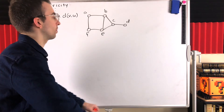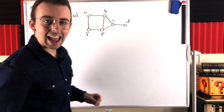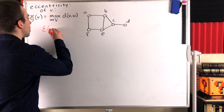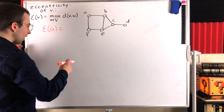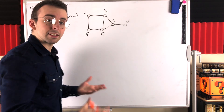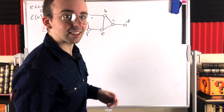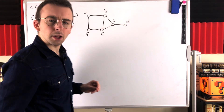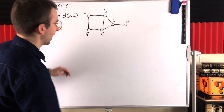So let's see a quick example with this graph. How about the vertex a? What is the eccentricity of the vertex a? For a larger graph, you might want to write out a list of all the distances between a and every vertex in the graph. But for this smaller graph, we can do it pretty easily just talking through it.